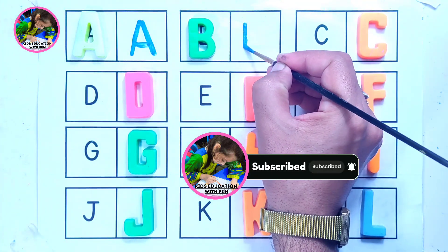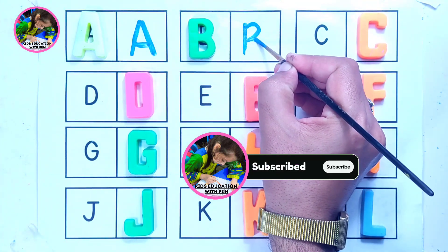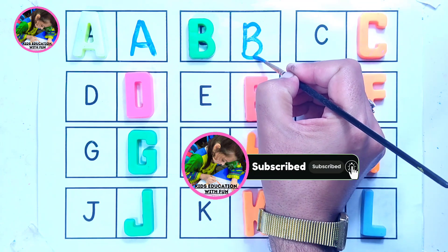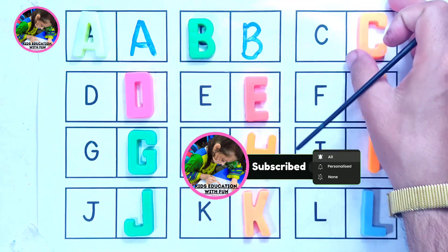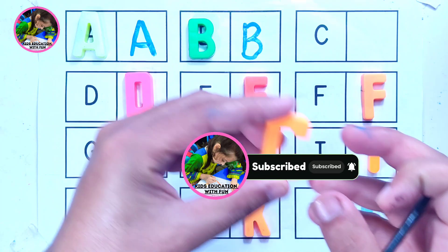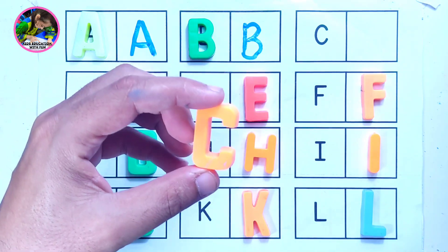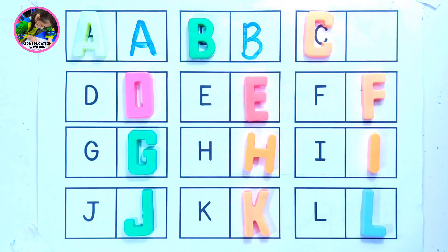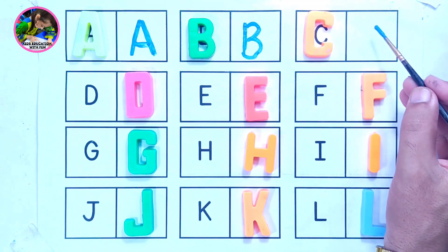Next to letter B is letter C. C is for cherry. Can you draw like this? Letter C. C is for cherry.